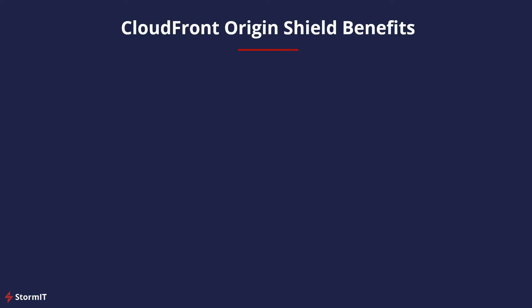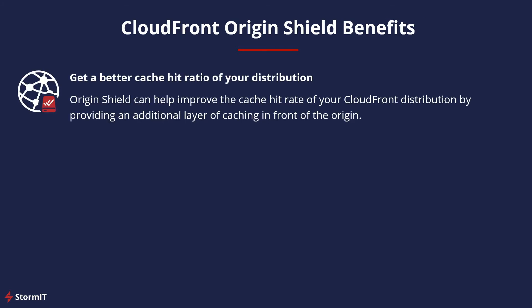So what are the Origin Shield benefits? First, you can get a better cache hit ratio for your distribution by providing an additional layer of caching in front of the origin. When you use Origin Shield, all requests from all CloudFront edge locations to your origin go through Origin Shield, increasing the chance of a cache hit. If you want to know more about cache hit ratio, read our blog post about it.